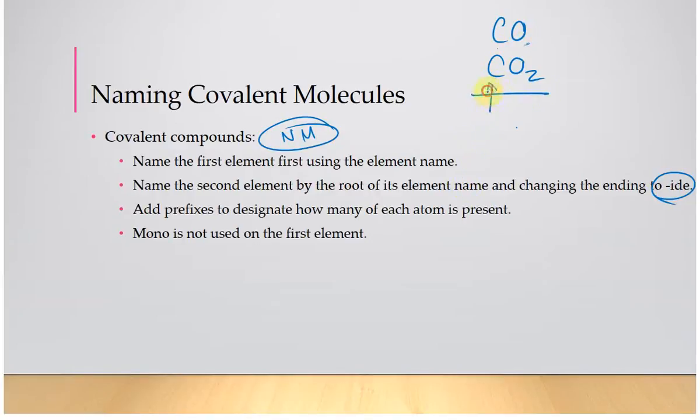This one, name the element by its element name, so it's just carbon. Oxygen becomes oxide. Now we're going to add a prefix to indicate the numbers. Don't need mono on the first. Dioxide. So carbon dioxide.